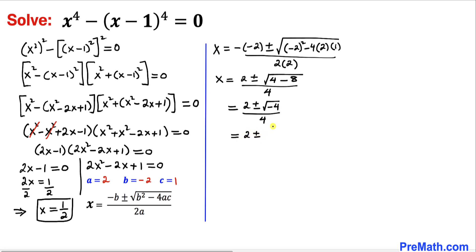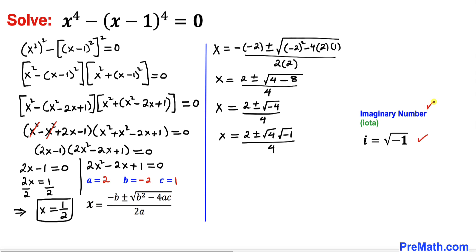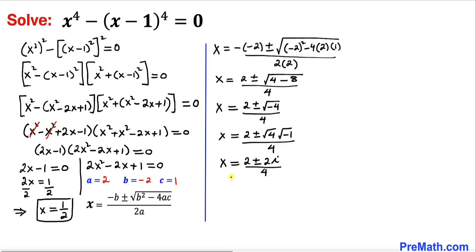This becomes 2 plus or minus the square root of 4 minus 8, which gives the square root of negative 4, all over 4. Recalling that i equals the square root of negative 1, where i is the imaginary number (sometimes called iota), the square root of negative 1 is i and the square root of 4 is 2. So this becomes x equal to 2 plus or minus 2i divided by 4. We can factor out 2 from the numerator to get 1 plus or minus i divided by 2.